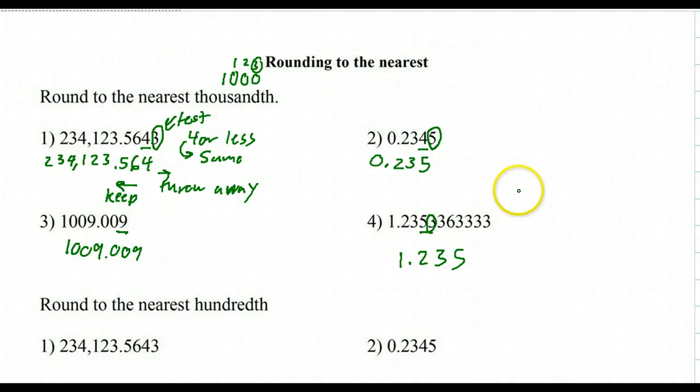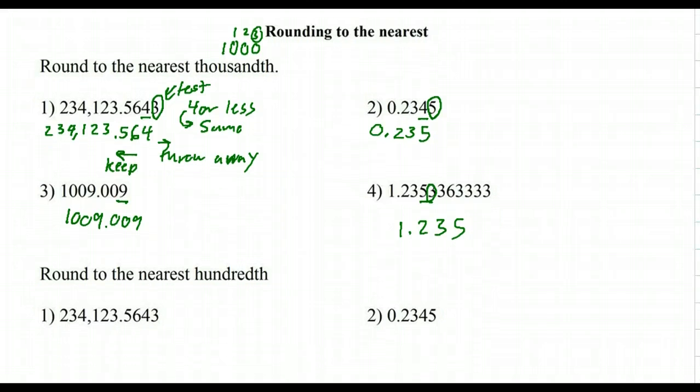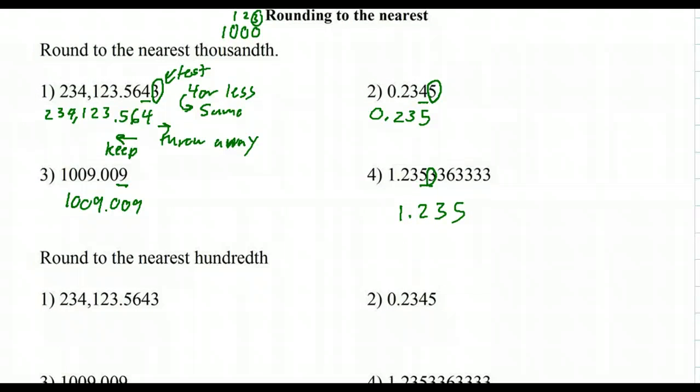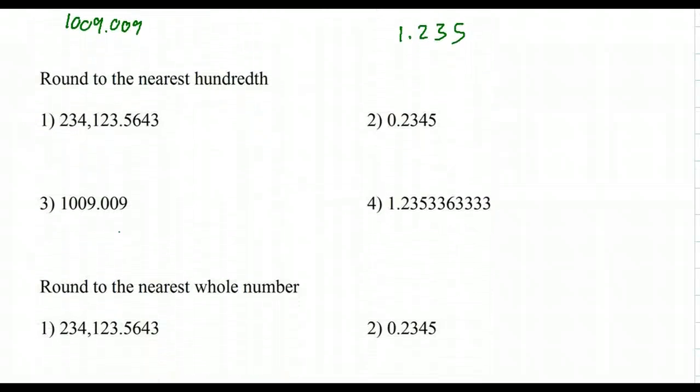I want you to hit pause and try number four. All right, so you should have gotten 1.235. So 1 and 235 thousandths, and that's why we're rounding to the nearest thousandths. That's the last number we say.